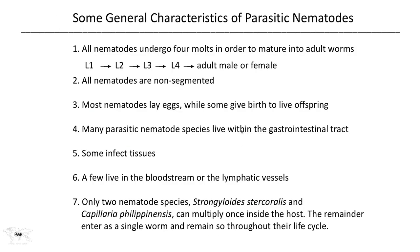Now let's talk about some general characteristics of nematodes. They all undergo four molts, starting with the first stage larva, then to the second, third, and fourth stage larva. Each one is punctuated by a molt and a growth stage, until finally, after the fourth molt, the nematode becomes an adult male or an adult female.